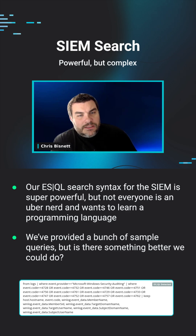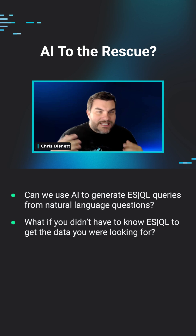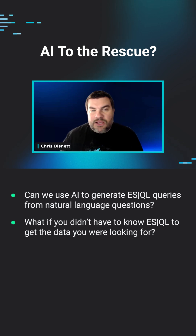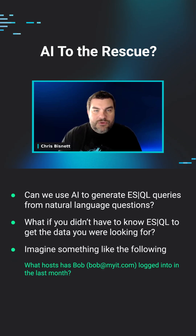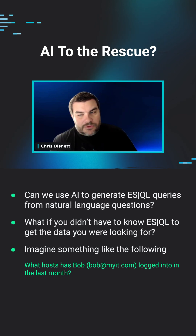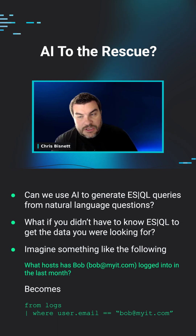On the next slide, there are some examples. Instead of having to figure out the ESQL, could you just say, 'What host has Bob logged into in the last month?' and have the AI generate that query? It would know to use the field user.email, compare it to Bob's email address, and add or remove the right events. How do we take that natural language question and turn it into the query? That's something we think is going to be really interesting.